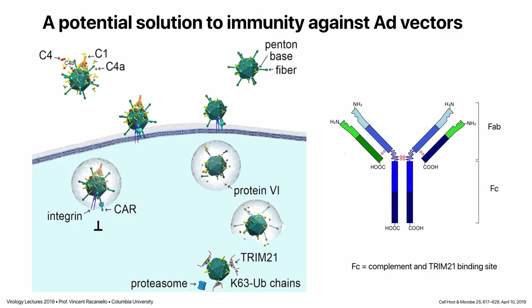So those are two different mechanisms of antibody neutralization. To get around this, researchers found that if you use only the FAB portion of antibodies — cutting away the Fc portion that interacts with complement proteins and TRIM21 — and coat the virus in FABs, it will not be subject to neutralization by either pathway. This was just published a few months ago, and trials are likely to be undertaken where they coat the vector with FAB fragments, which are non-neutralizing because the Fc is absent.